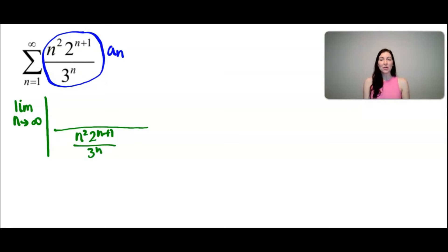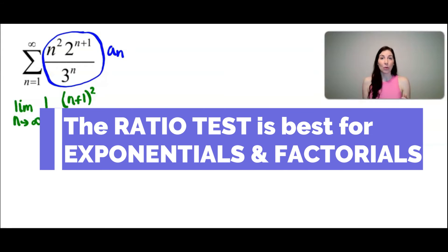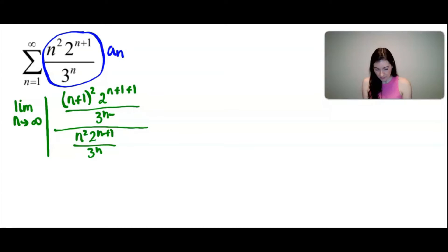I did want to mention that the best cases to use the ratio test are when you're going to have exponentials or factorials. Since this series has exponentials, this is the perfect situation to use the ratio test. I'm writing the a_(n+1) term — so wherever there's an n, I'm replacing the n with n+1 — and then closing out the absolute value.